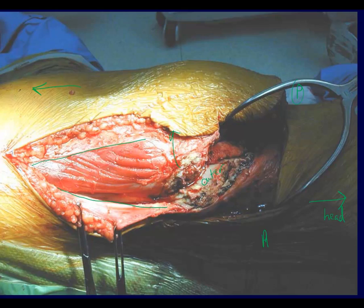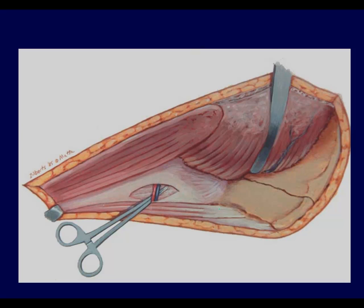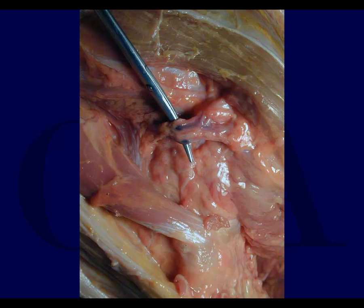You retract the tensor fasciae latae muscle posteriorly. You incise the sheath of the rectus femoris and ligate the ascending branches of the lateral femoral circumflex arteries. Just like with the Smith-Peterson, you find the ascending branches of the lateral femoral circumflex and ligate those.